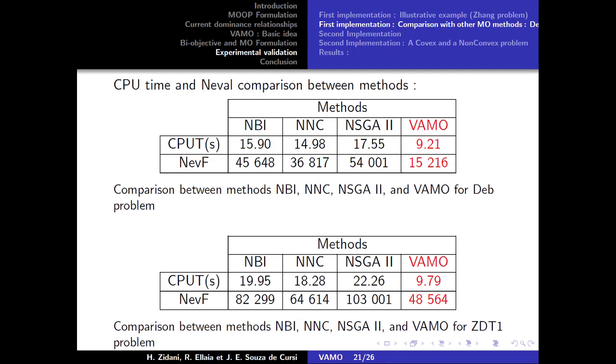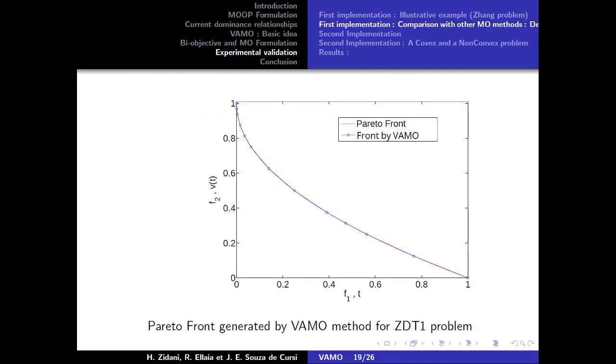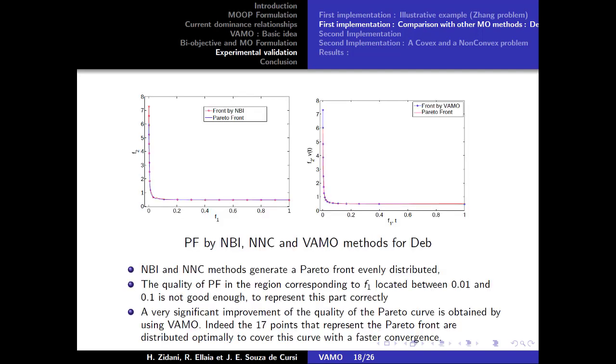The quality of the Pareto front in the region corresponding to F1 located between 0.01 and 0.10 is not good enough, since 3 generated points are not sufficient to represent this part correctly. We also observe that a very significant improvement of the quality of the Pareto curve is obtained by using VAMO.